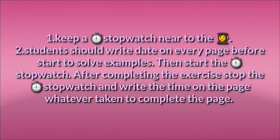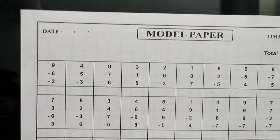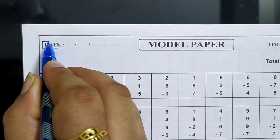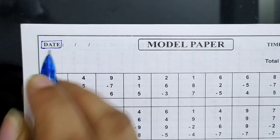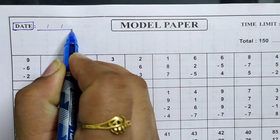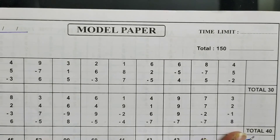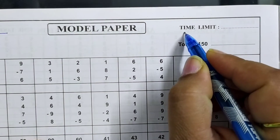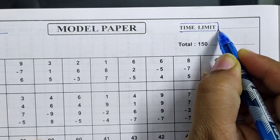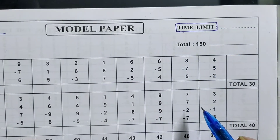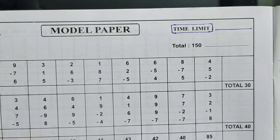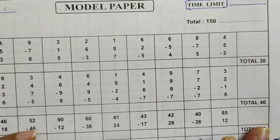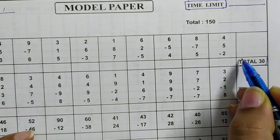Please check this video. In this model paper you will see where to write the date. This is the option where you write the date. In this model paper, you also write the time limit here, and you write the total marks here.